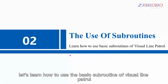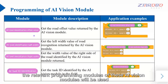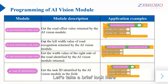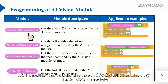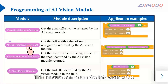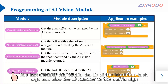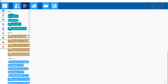Now let's learn how to use the basic subroutine of visual line patrol. The relevant programming modules of these AI vision modules will be used. This module can obtain the road offset value returned by the AI vision module. This module can return the left width value, this module can return the right width value, and the last module can obtain the ID of the identified task sign and the ID number of the traffic sign.